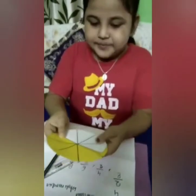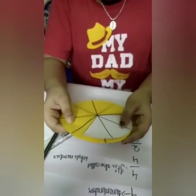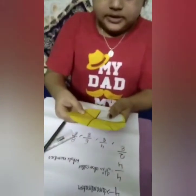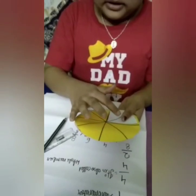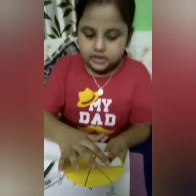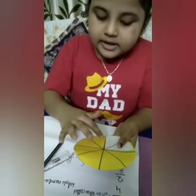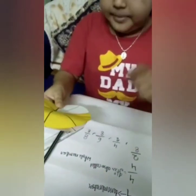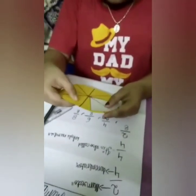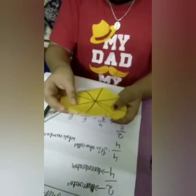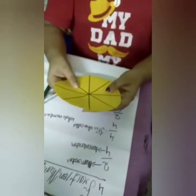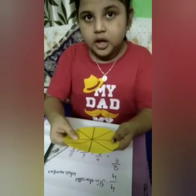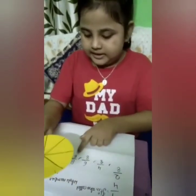Now I will take the example 6 by 8. Here 8 parts are there in total, and the colored parts are 1, 2, 3, 4, 5 and 6. So the answer will be 6 by 8. Now I will take the example 8 by 8. In 8 by 8, all parts are colored. So the answer will be 8 by 8.